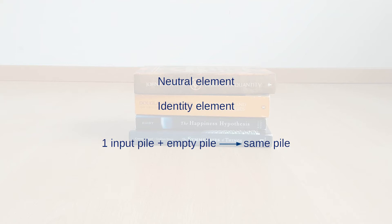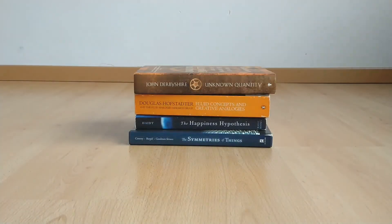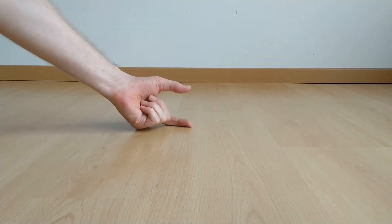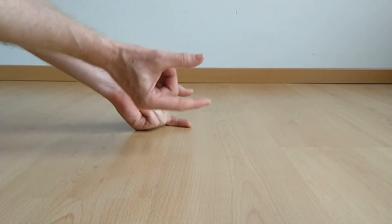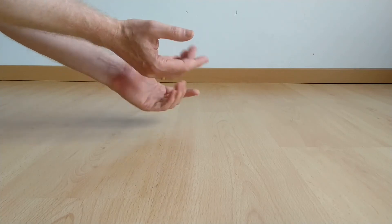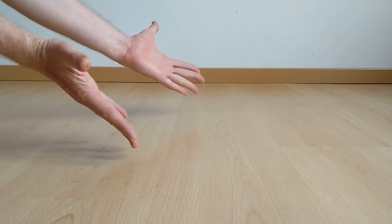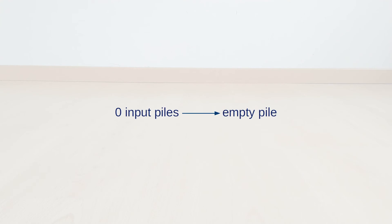The empty pile is called the neutral element because it doesn't do anything — it remains neutral. You can stack it as often as you like and it never changes the pile that you put it on top of. It is also known as the identity element because it leaves the original pile identical to itself. As it happens, the empty pile also covers the other special case: what happens when we have zero inputs? Just use our binary operation on two empty piles. After stacking two empty piles on top of each other we end up with an empty pile. So we now know how to apply our binary operation to zero inputs.